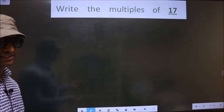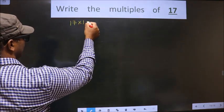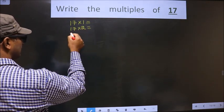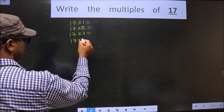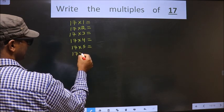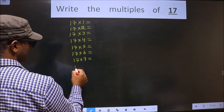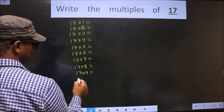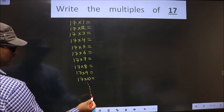To get the first multiple of 17, we multiply 17 by 1. To get the second multiple, we multiply by 2. To get the third multiple, multiply by 3, and so on — by 4 for the fourth, by 5 for the fifth, continuing through the sixth, seventh, eighth, ninth, and tenth multiples. And it goes on.